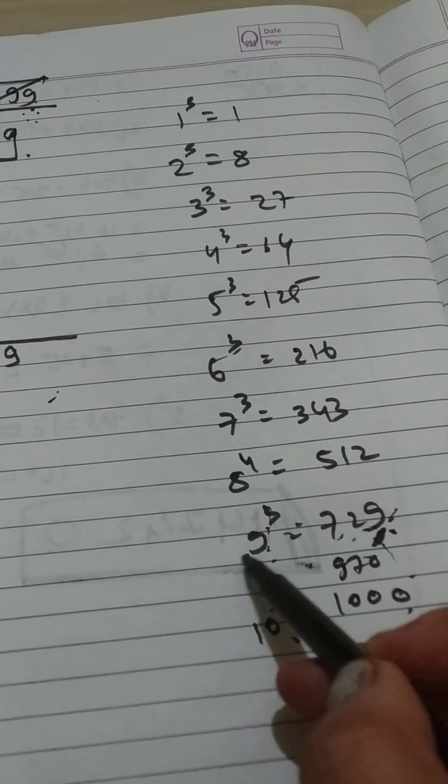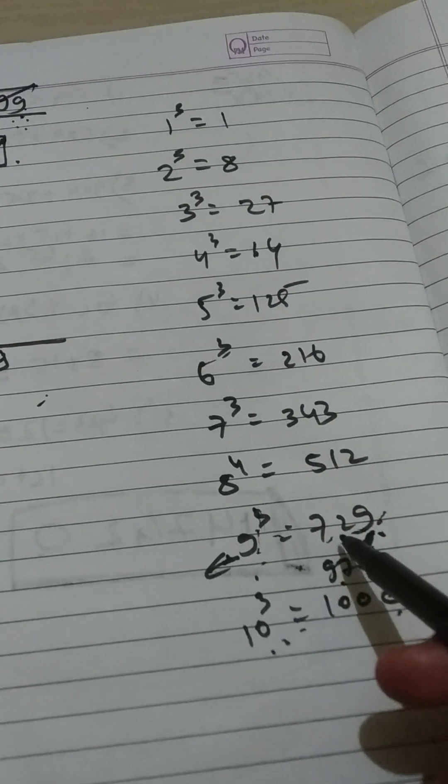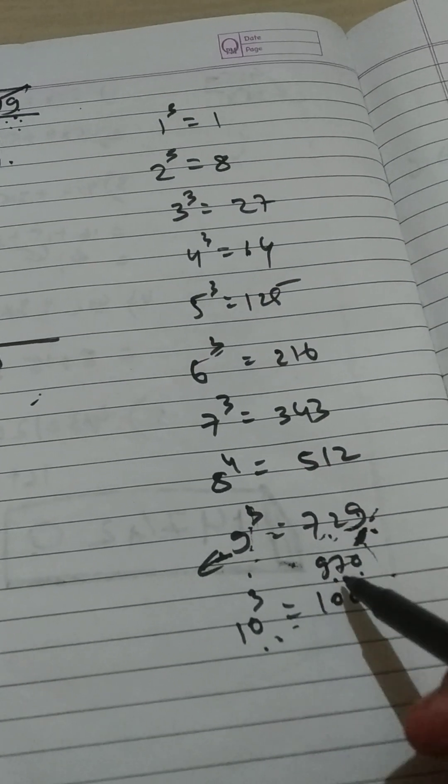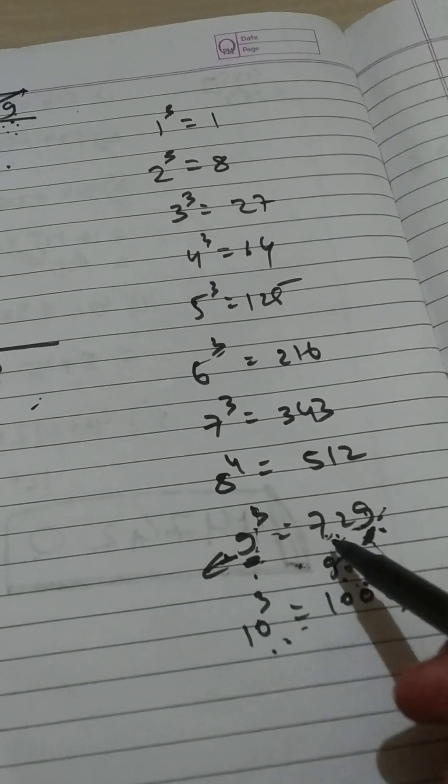Here 970 lies, so what we will do in this condition - we will take the smallest number. 970 is bigger than 729.